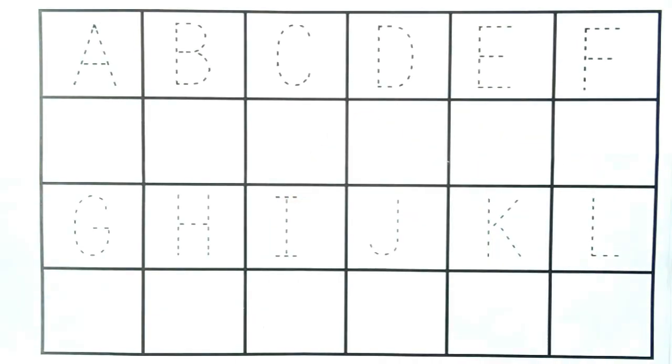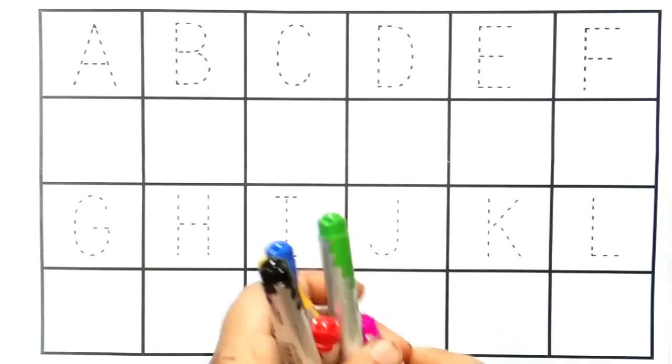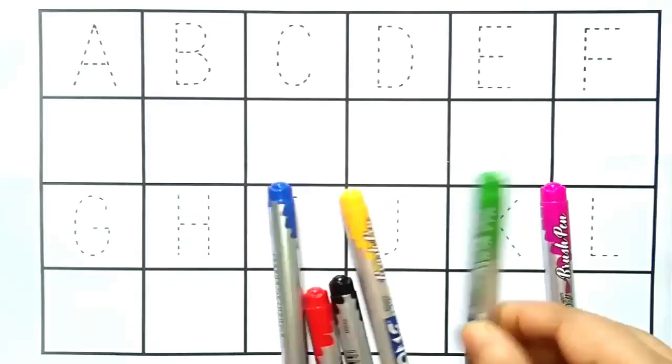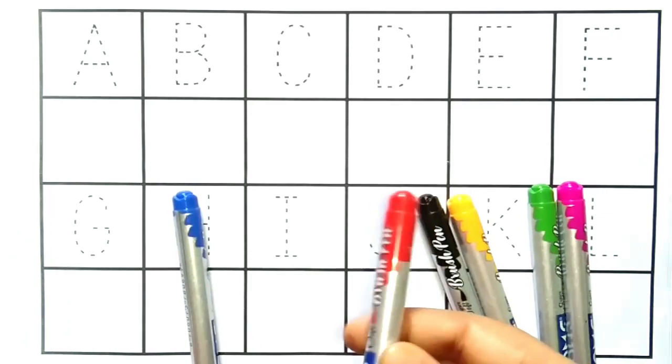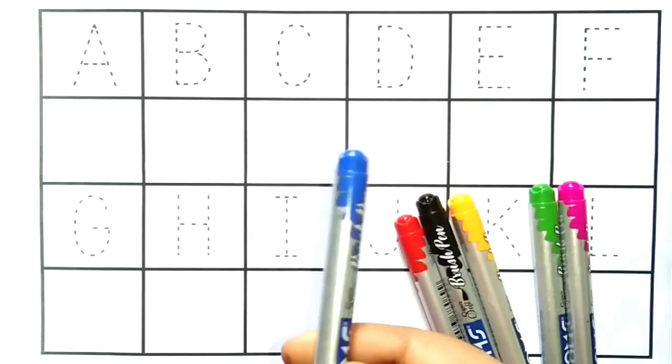Hello kids, welcome to my channel. Let's learn ABCD alphabets and one to 12 numbers counting. Let's learn some colors name. Pink color, light green color, yellow color, black color, red color and blue color.